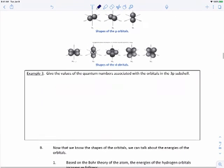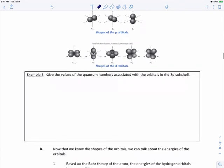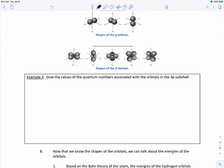So putting this together, here's our next question. Given the values of the quantum numbers associated with the orbitals in the 3P subshell. So let's break this down. If we're told 3P, right off the bat, we actually know two of the quantum numbers already. The number 3 tells us N, and then P tells us the L value.